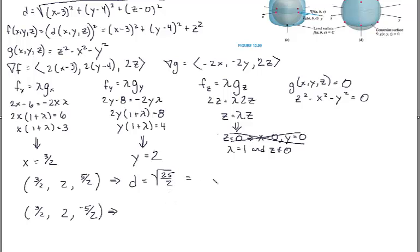And this is, of course, 5 over the square root of 2. And this one will be the same thing because you're squaring those numbers.